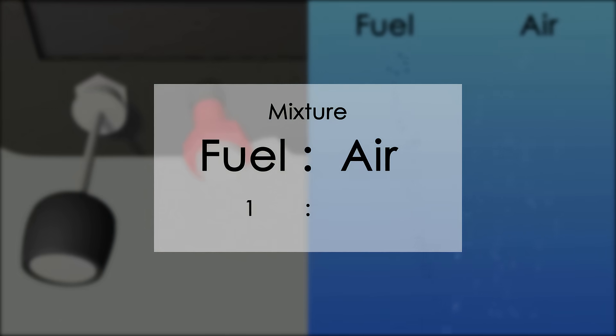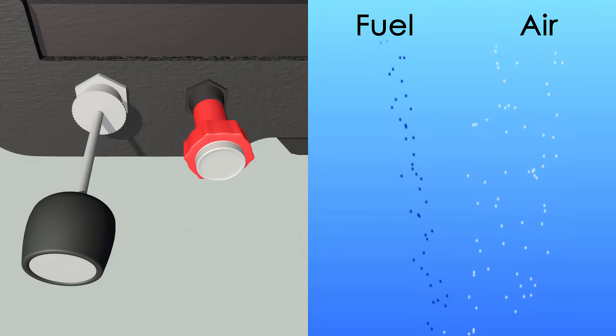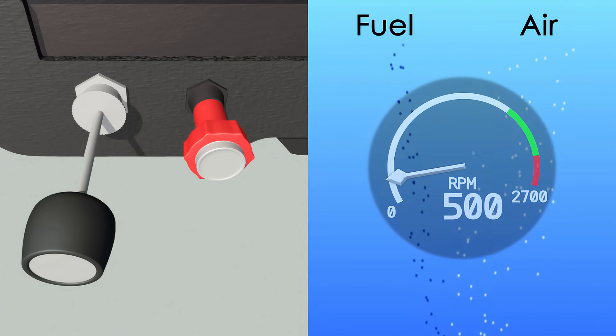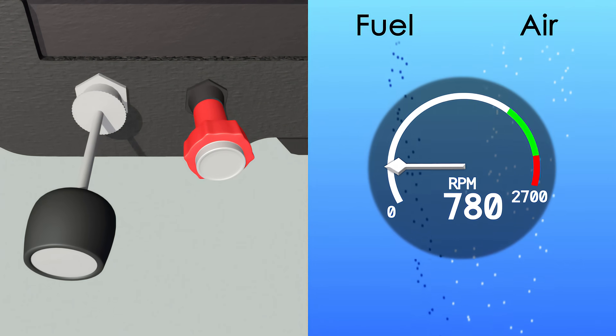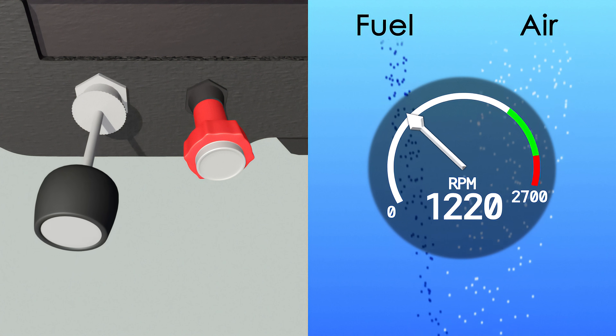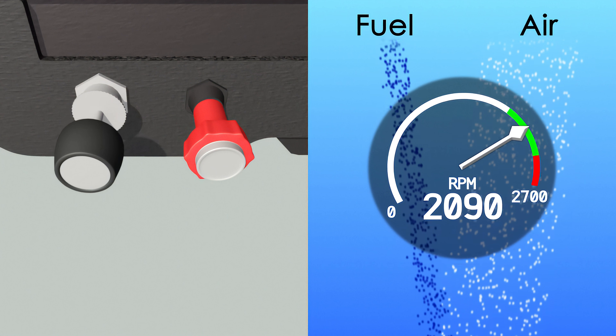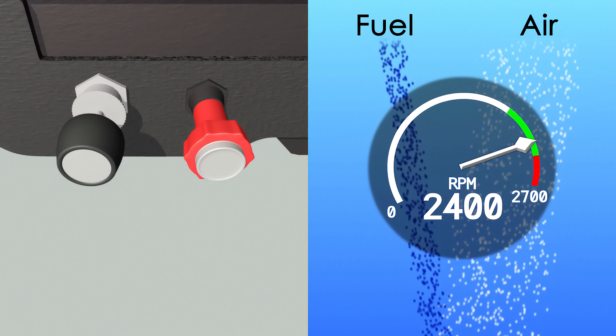Typically, for every fuel molecule, there are 15 air molecules. The mixture adjusts the amount of fuel necessary to maintain this ratio. The throttle, on the other hand, controls how much of that ratio is let into the cylinders. The more the throttle is open, the more fuel and air enter the cylinders, and therefore, the more powerful the combustion will be, making the engine run faster.